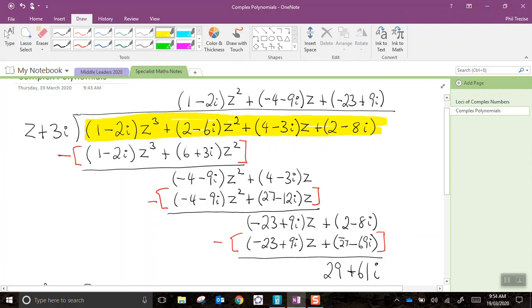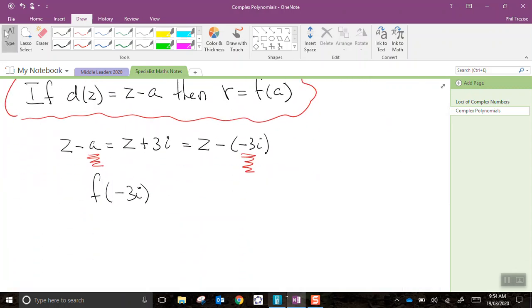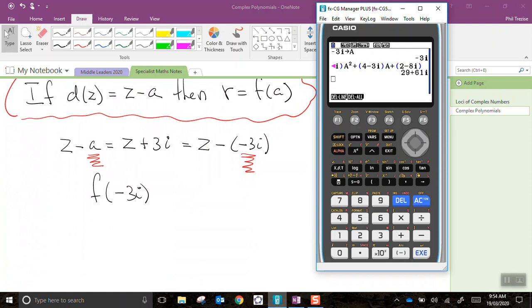Wherever there's a z, we'd put negative 3i. Now, we could do it on the pencil and paper, or we could use our calculator. Even if it was a tech-free question on an exam, the question finished once we'd done the long division. This is just me checking what we've done. So, you can see what I've done here for convenience. I stored negative 3i in the variable a, and then I came down here and typed an equation. So, this is my polynomial, and everywhere there was a z, I've used a to represent the number negative 3i.